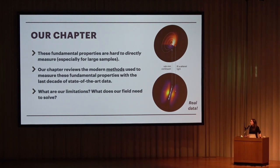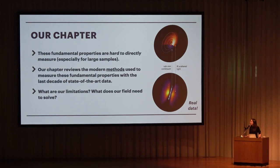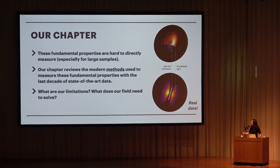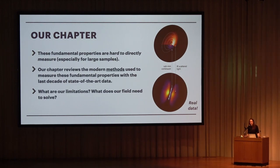Our chapter aimed to review what we've been doing over the last decade with this beautiful data — what does modern method development look like to measure fundamental properties like disk mass and disk size? The data truly are beautiful. We're seeing scattered light from the surface of a disk compared to compact ALMA millimeter emission. Here's an edge-on disk with a beautiful scattered surface and a pancake-thin millimeter layer. We wanted to review methods to learn what disks look like in the aggregate, and examine the limitations of our current methods — what does our field need to solve before the next Protostars and Planets?